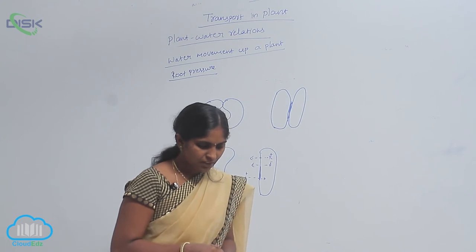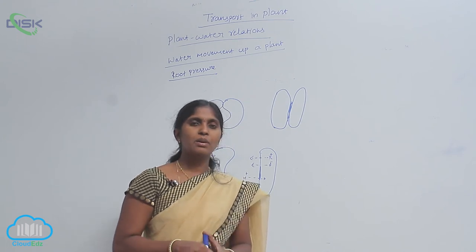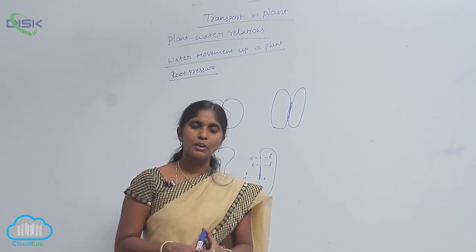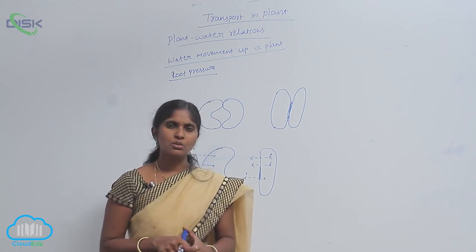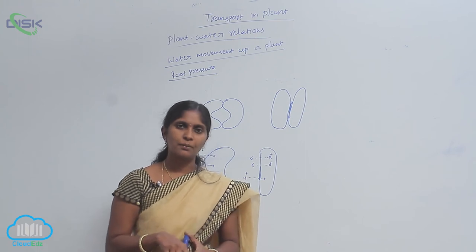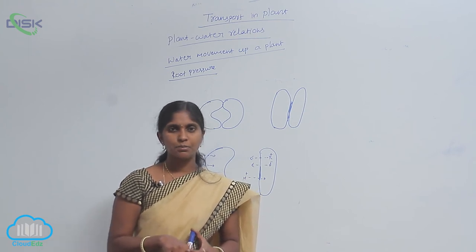The internal factors include number of stomata, distribution of stomata, opening and closing of stomata, and shoot-root ratio. These all affect the transpiration.